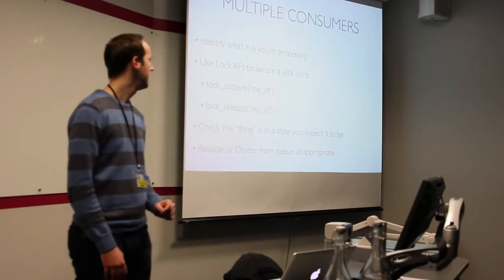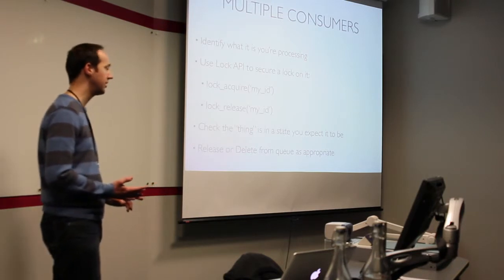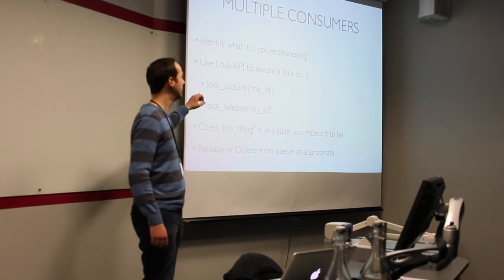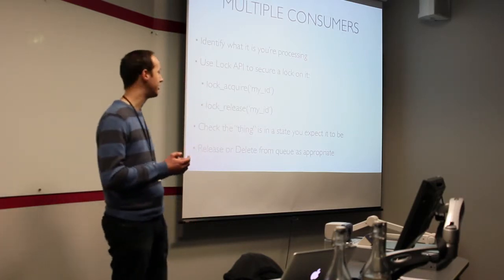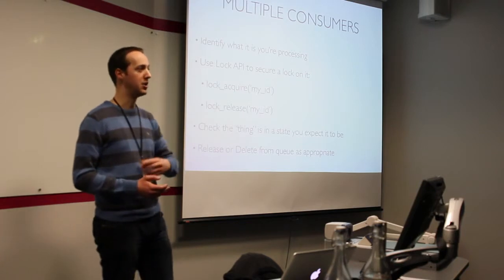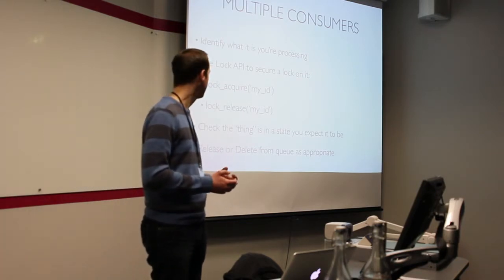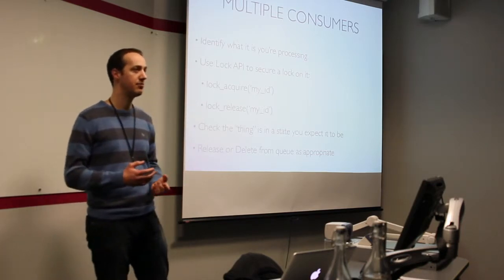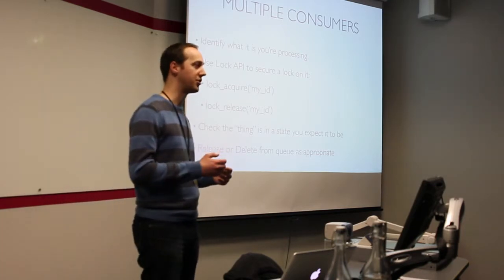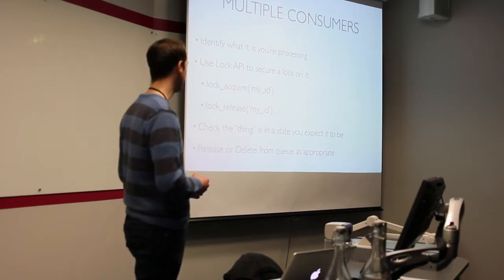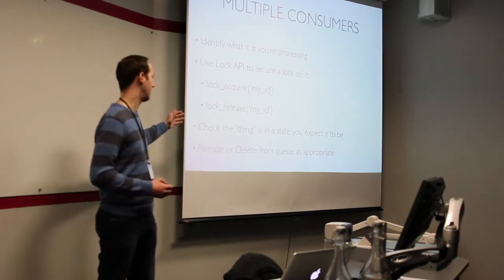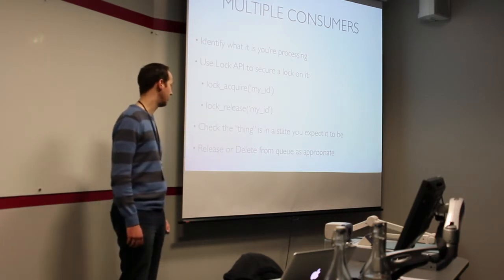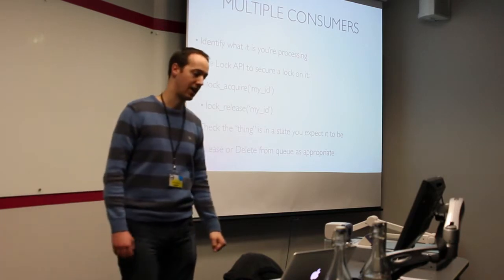How do you get around that? Identify what it is that you're processing. You can use the lock API to secure a lock on it — call lock_acquire and pass an ID, such as your order ID or user ID. When you finish processing it, call lock_release. So if that user is in there twice, it can get processed twice, but only once at a time so it's not competing. Check that the thing you're locking is in the state you expect it to be. If you're happy with it, release it and delete it as applicable.